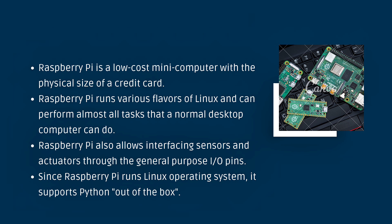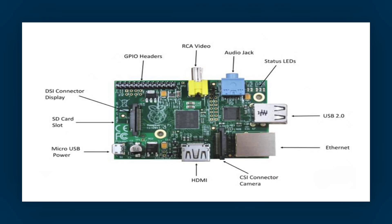In the Raspberry Pi, it is running a Linux operating system. It is also running out-of-the-box Python. The components include an SD card slot, micro USB power, and a DSI connector display.